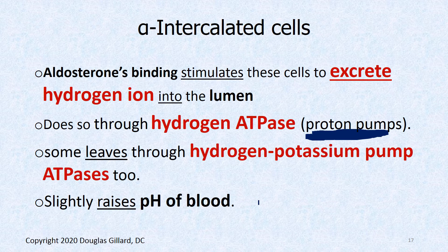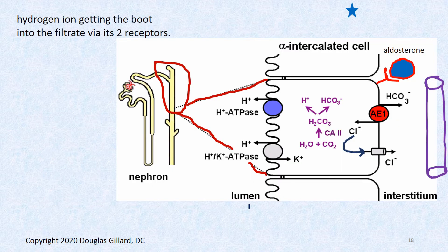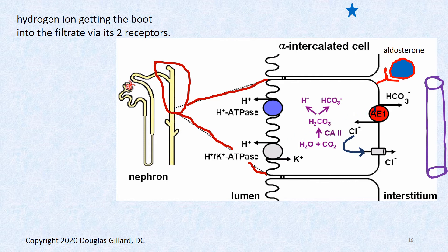If you kick hydrogen ion out of the blood, it's going to raise the pH and make it more basic. Here's our aldosterone binding to an intercalated cell, stimulating a hydrogen ATPase pump to pump hydrogen out and also stimulating expression of a hydrogen-potassium ATPase. Both are doing the job of kicking hydrogen ion out into the urine. Bicarbonate is also being exchanged and kicked out the other side, as is chloride.